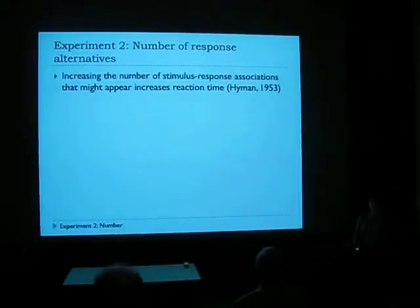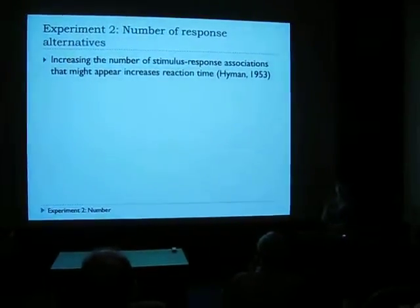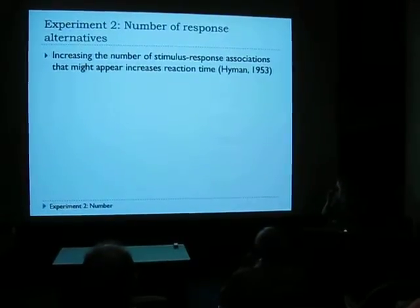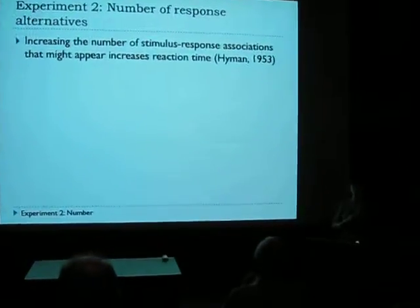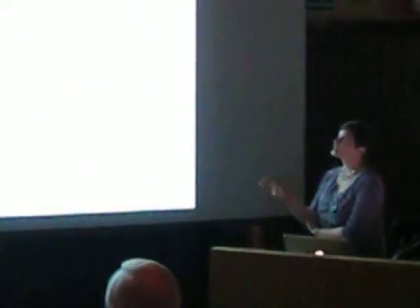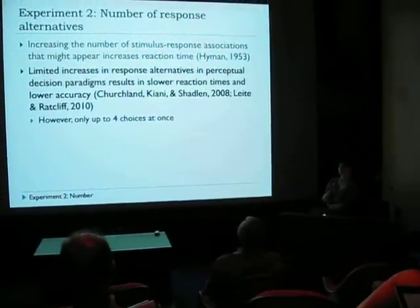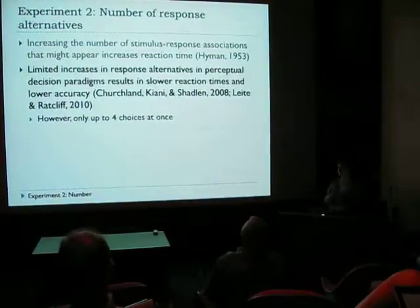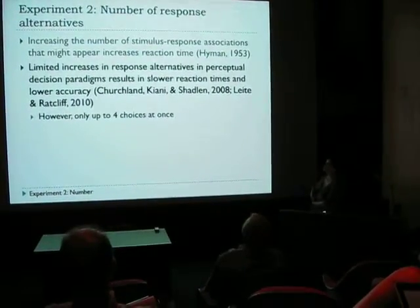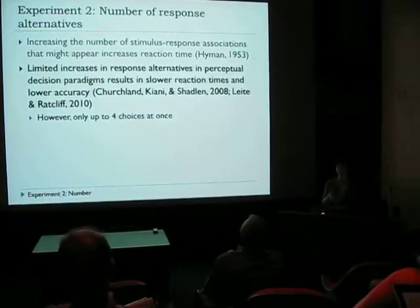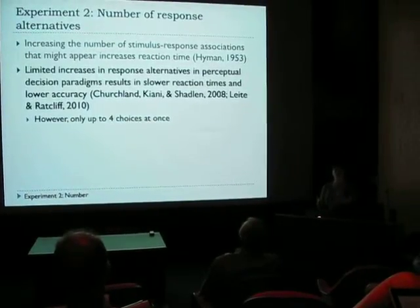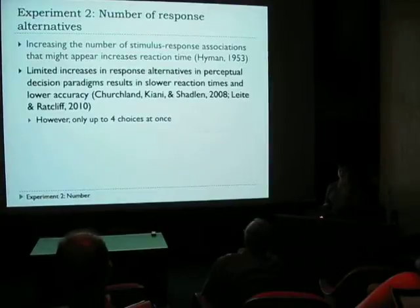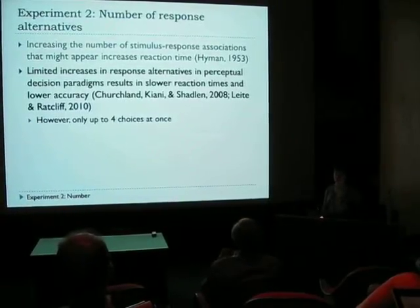If you increase the number of specific light-button press associations in a straight-up stimulus-response paradigm, the more of those associations you have to keep in mind, the slower you are to execute any single one of them. In addition, studies that have increased the number of response alternatives in a perceptual decision have also found slower reaction times and lower accuracy. So as you increase the number of response alternatives, we see an increase in reaction time and decrease in accuracy.